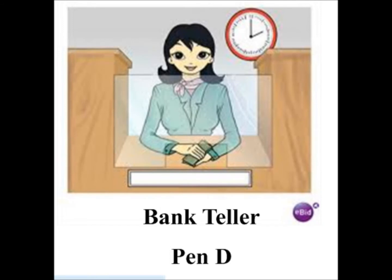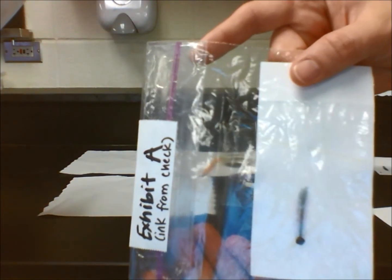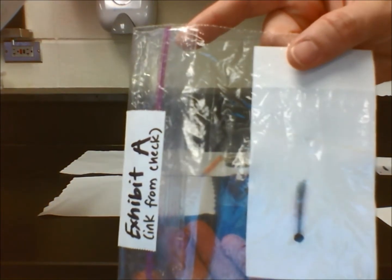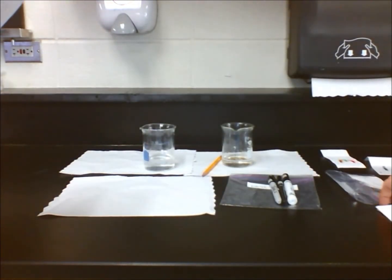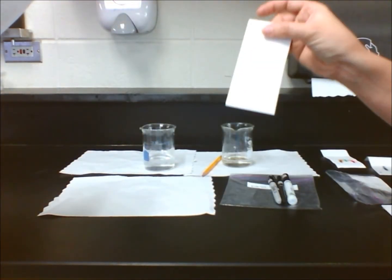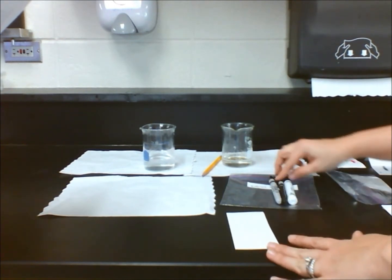Exhibit A shows a chromatogram of the ink that was extracted from the check. We will conduct an experiment much like the one we performed in lab 17.2 with the black, brown, green, and red marker to determine whose pen actually wrote the check.